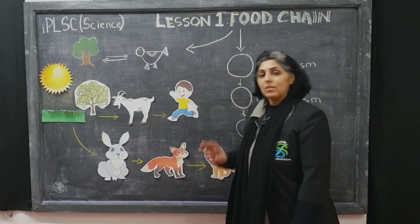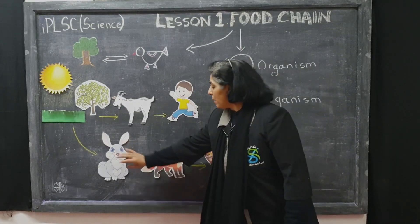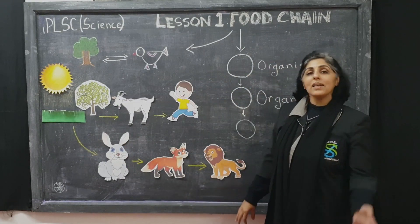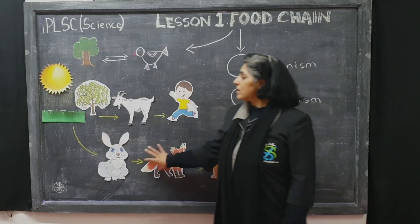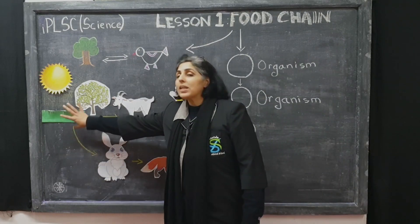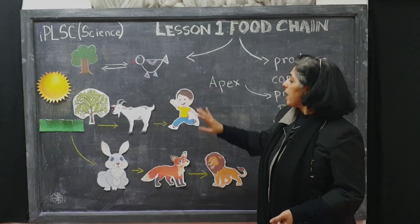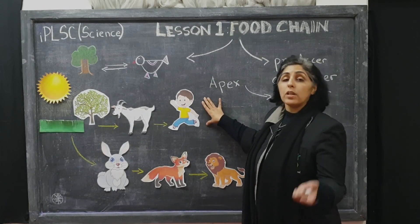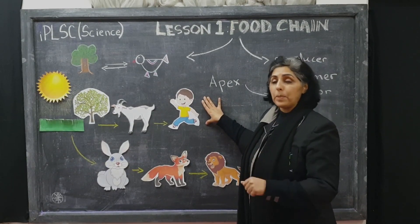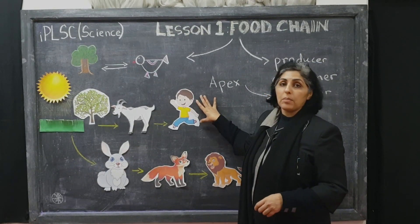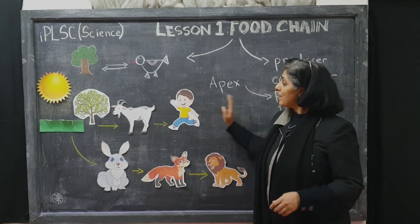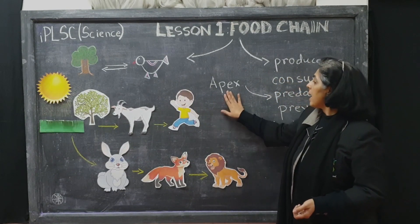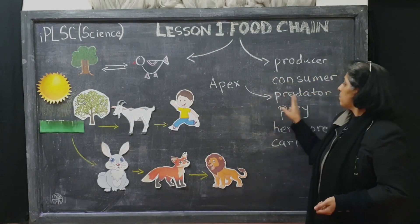The fox is eaten by the lion and the lion is also called a carnivore because it is eating meat. All three of them — the rabbit, the fox and the lion — are called consumers because they are consuming the producer. So you see at the end of both the food chains, the last one or the top being has a special name. There's no one else eating them, so this one is called an apex predator.